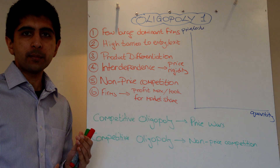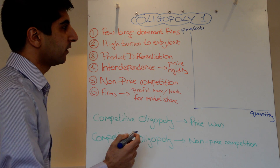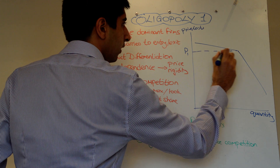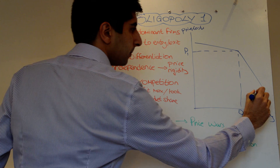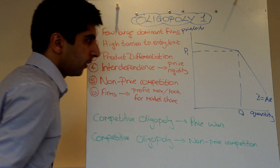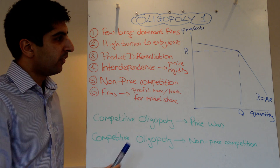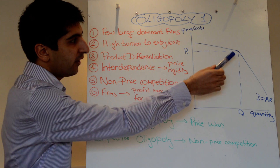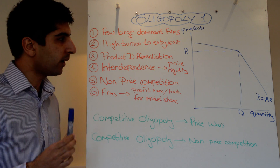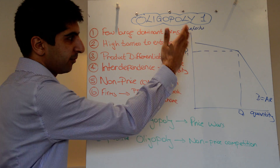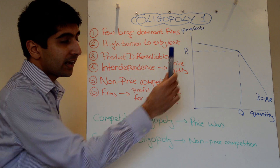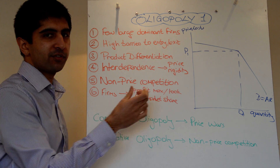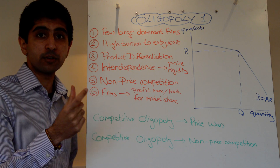So how does this actually work? It starts with an assumption that firms have settled on a price — I'm going to call that price P1. At price P1, there is also a quantity of Q1. The idea is that at price P1, the demand curve around it is kinked — very elastic above and very inelastic below P1. It's called kinked demand curve because of this kinked demand curve, which is actually two demand curves stuck together.